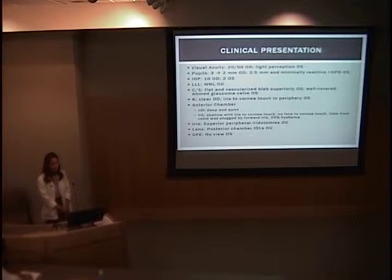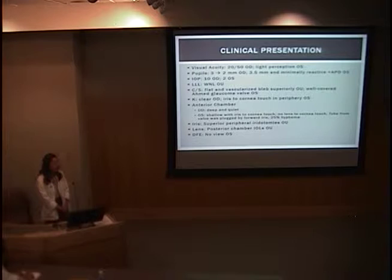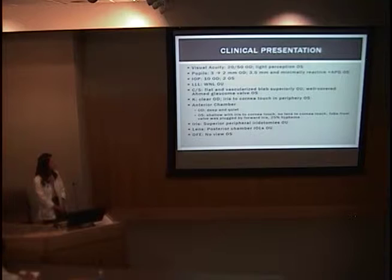On exam, he had a visual acuity of 20/50 in the right and light perception in the left eye. His pupils were 3 to 2 millimeters in the right and 3.5 millimeters and minimally reactive with a positive APD in his left eye. His pressures were 10 in the right and 2 in the left. Lids, lacrimal, and lashes were within normal limits. The conjunctiva and sclera showed flat and vascularized bleb superiorly in both eyes.